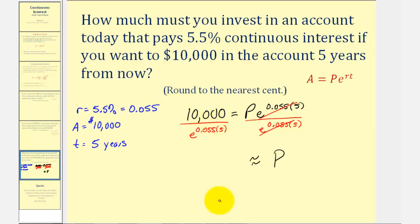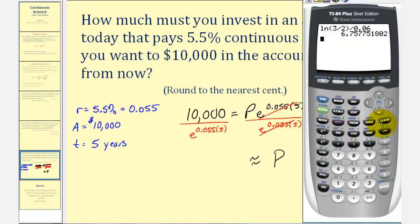So going to the calculator, we'll have 10,000 divided by second natural log, and the exponent is 0.055 times five, close parenthesis, and enter.